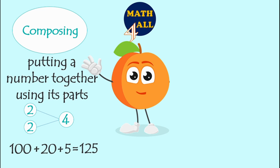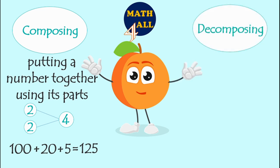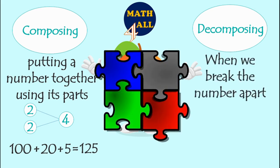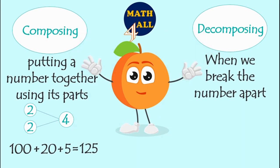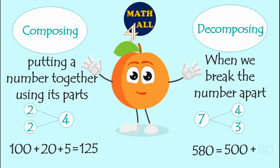On the other hand, we have decomposing. Decomposing means when we break the number apart. For example, if I wanted to break 7, I may have 3 and 4 — this is decomposing, we break the number. Another example: if I want to decompose 580, it will be 500 plus 80 and so on. So composing means putting together.